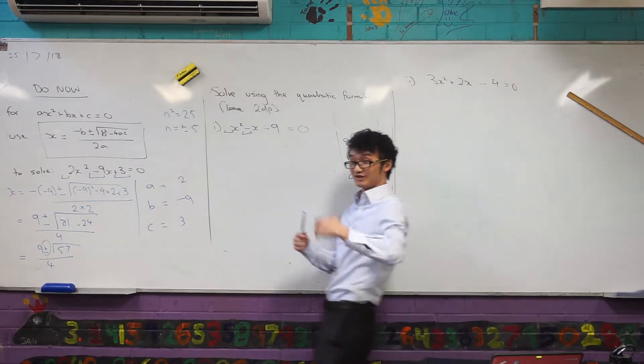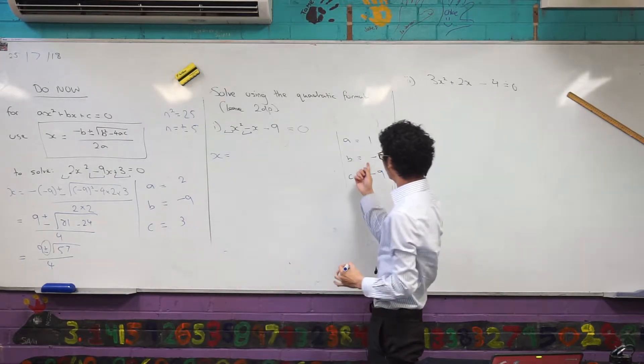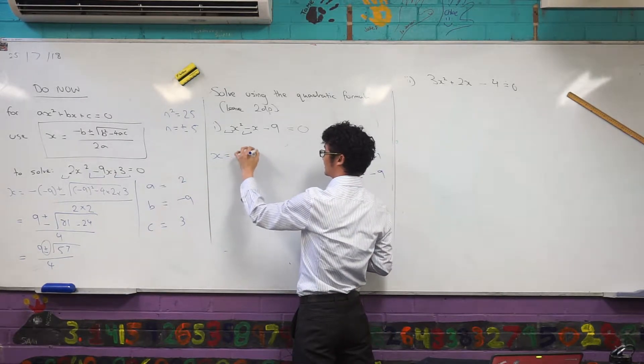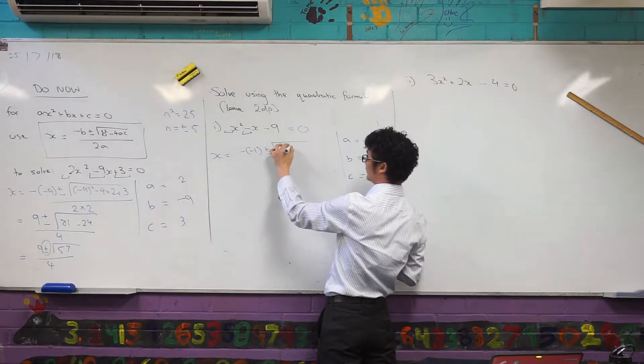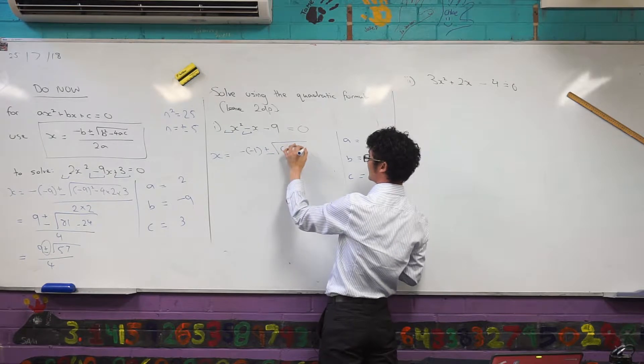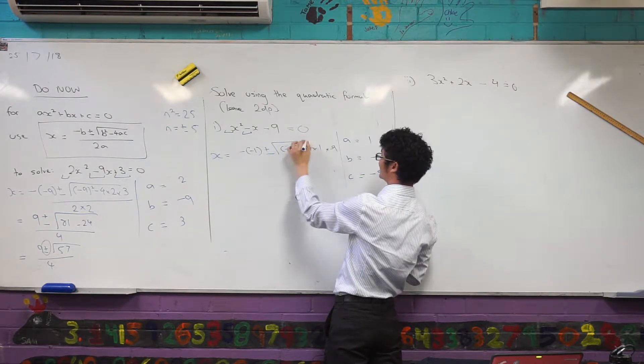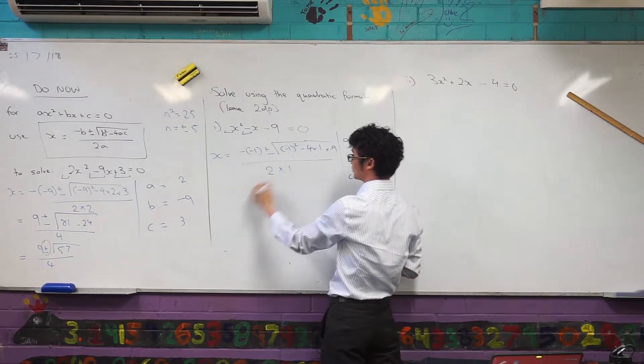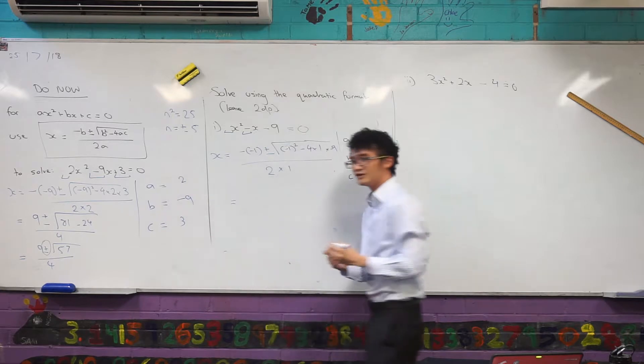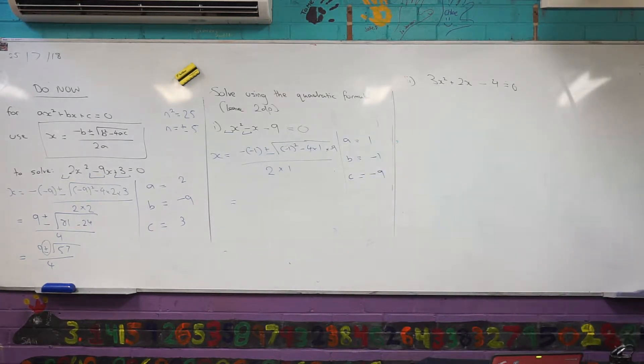And then I'm going to solve for x. Substitute into my quadratic formula. I've got minus negative one, plus or minus root, b squared, negative one all squared, minus four times one times negative nine. So a lot of negatives here, I just want to be careful. And then two times a, or just two times one. Now, when you're leaving it as exact, what you usually have to do is simplify this out.